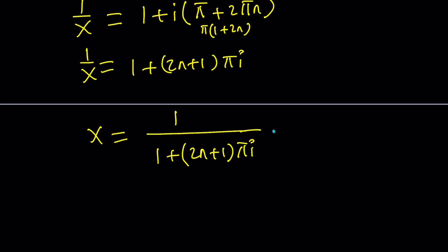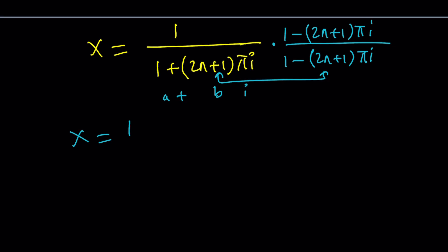So we're going to notice that this is in standard form kind of like a plus bi, right. So you need to multiply by a minus bi. So it's going to be 1 minus the quantity 2 n plus 1 times pi i. And the same thing at the bottom. So essentially we're multiplying by 1 but now changing the denominator and the numerator so that x becomes the numerator is 1 times that.